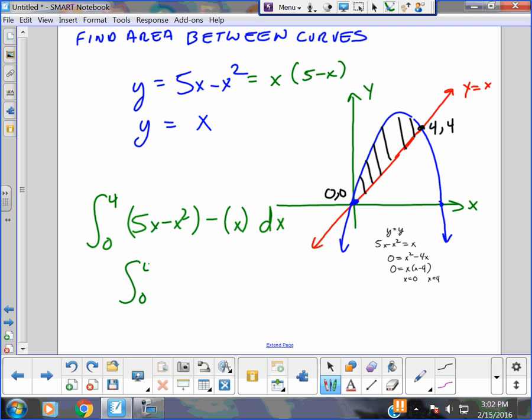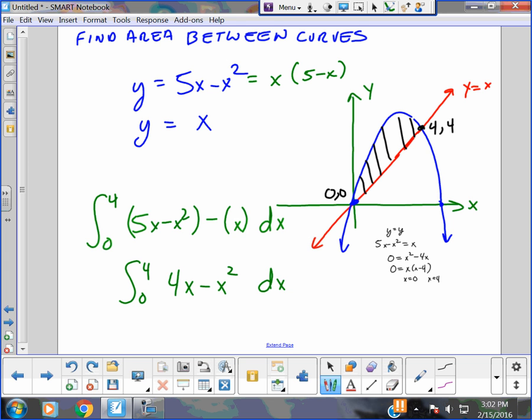Now, I combine my terms immediately. I take 5x minus x. I don't want to integrate them separately. That's half the battle here, doing it together. So now I'll integrate it. I think it's 4x squared over 2, minus x cubed over 3, from 0 to 4.